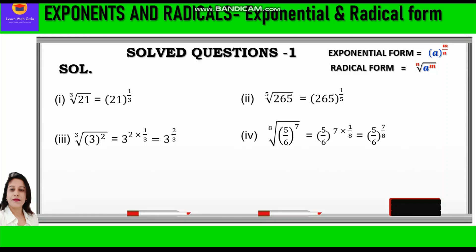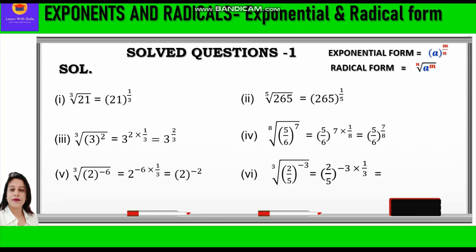Fifth question: cube root of 2 raised to power minus 6. The power is minus 6, which comes in the numerator, and 3 is the root, which comes in the denominator. We write 2 raised to power minus 6 times 1 by 3, which equals 2 raised to power minus 2. Sixth part: cube root of (2 upon 5) raised to power minus 3. Minus 3 is the power in the numerator and 3 is the root in the denominator. We write (2 upon 5) raised to power minus 3 times 1 upon 3; the 3s cancel, leaving (2 upon 5) raised to power minus 1.